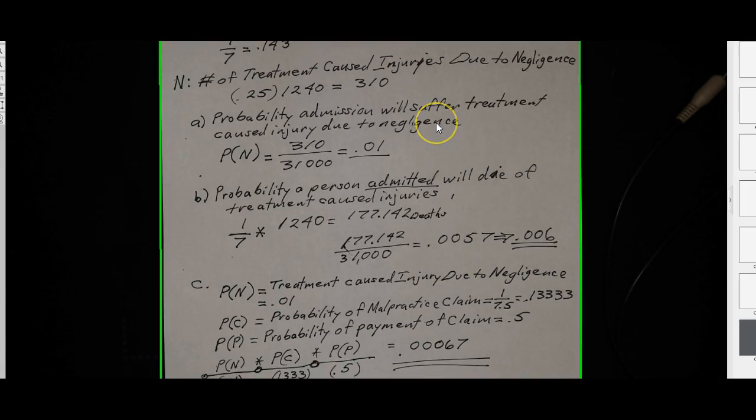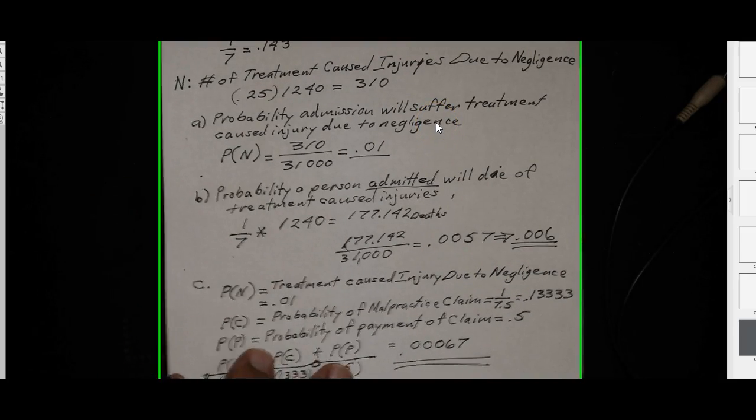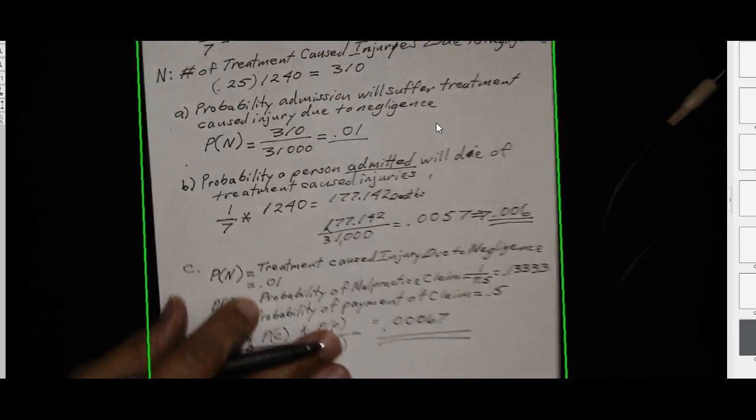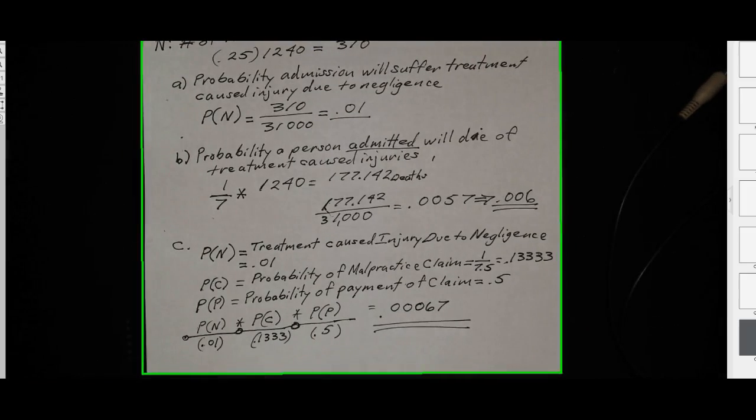Part C is a little tricky. Part C is very tricky. They want to know, I didn't copy down the whole problem, but they basically want to know of those treatment caused injuries due to neglect, which we found to be 0.01, what's the probability that a malpractice claim that's filed as a result of that neglect?